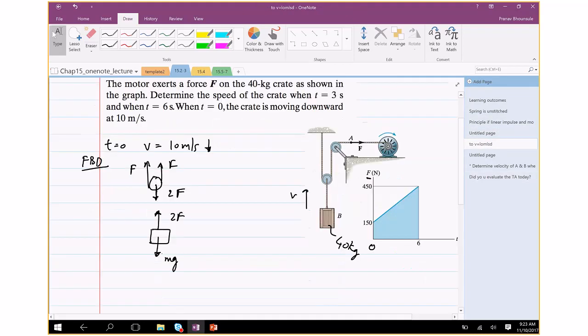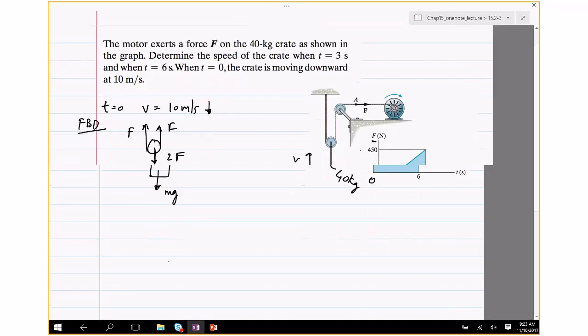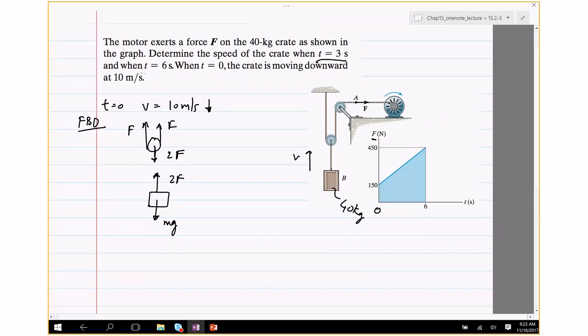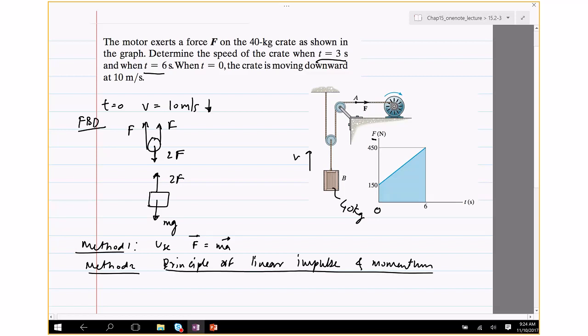So we see that in this problem you're asked to find the velocity at, or speed at, t equals 3 seconds and t equals 6 seconds, which means that you should think of using principle of impulse and momentum. Again, you could use F equals ma, you'll get the same answer. In fact, this could very well have been asked in the chapter, I think it's 13. However, we will use principle of linear impulse and momentum.